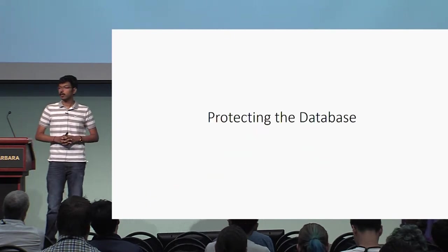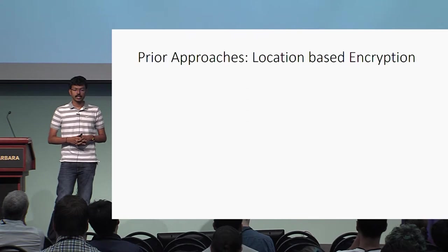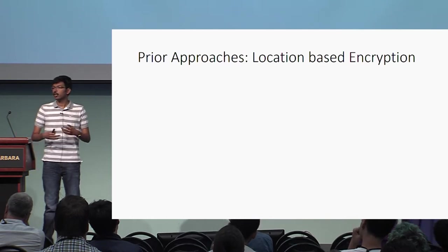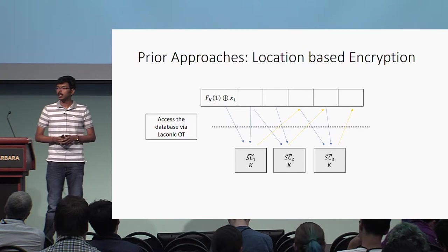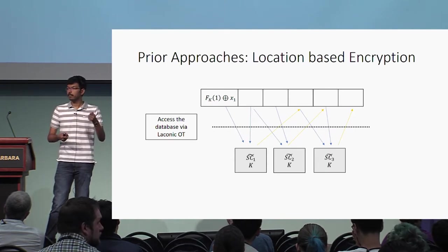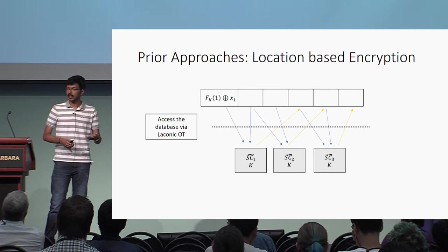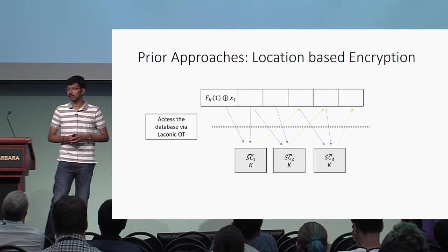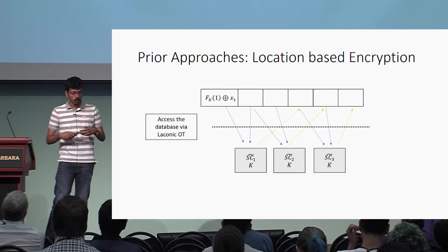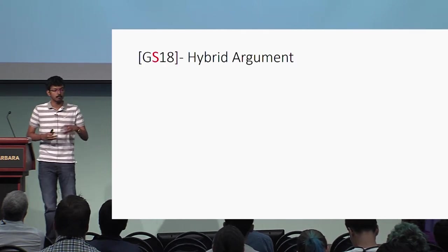In the rest of the talk, I'll focus on the first challenge of how to protect the contents of the database; the second challenge is solved using a specialized ORAM scheme, and I encourage you to look into the paper for the details. Before presenting our solution, let me explain why prior approaches are not sufficient. Prior approaches use a location-based encryption scheme — for example, the content at location 1 is masked using a pseudorandom function evaluated at 1, and this PRF key is hardwired in each of the step circuits. This PRF key is used for unmasking the read value as well as generating the mask for the value that is going to be written.